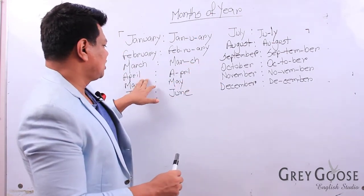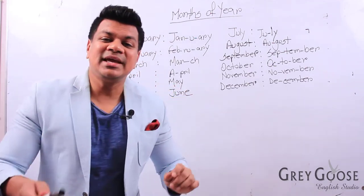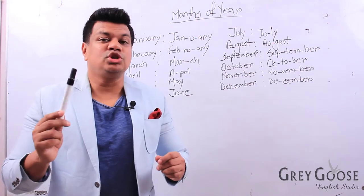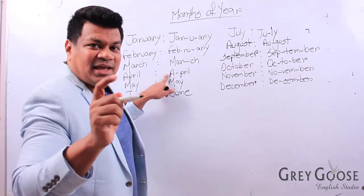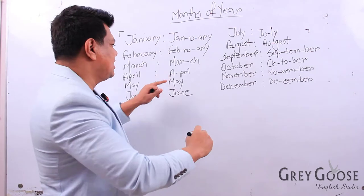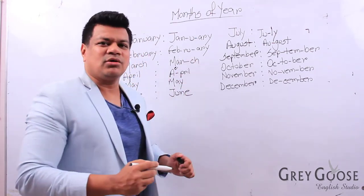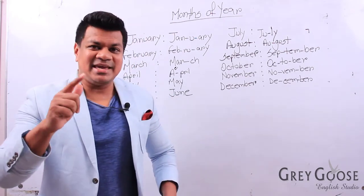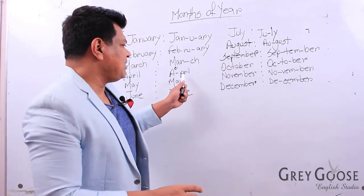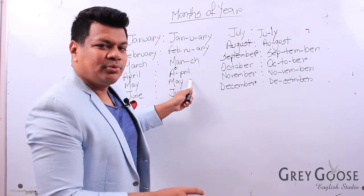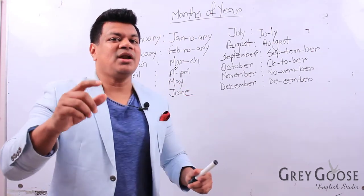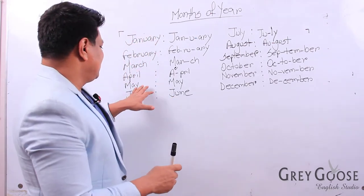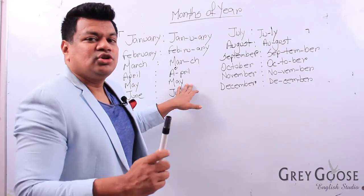Next one: April. Many people pronounce it wrong. So look — the first part is pronounced separately. If you put a little 'e' on top it would make it easier for you. So that's going to be 'a' and then 'pril.' April, April, April. Don't pronounce it 'April' — it should be April.